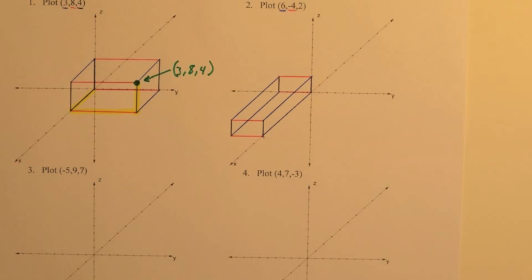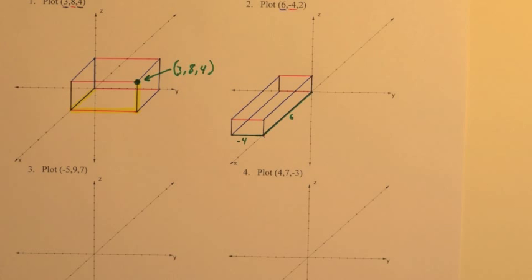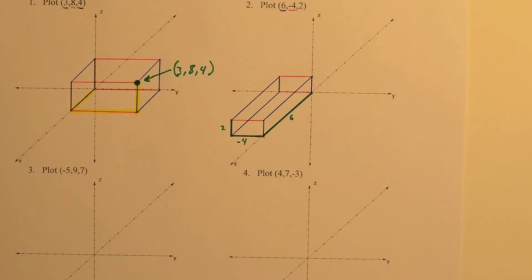And then our job is to plot the point. So 6 in the positive direction for x, forward 6, to the left 4 and up 2. And so, our point is that vertex, that corner of the prism.